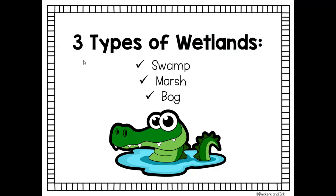There are three main types of wetlands that we're going to talk about today: swamp, marsh, and bog.